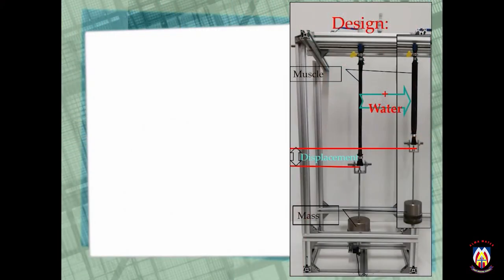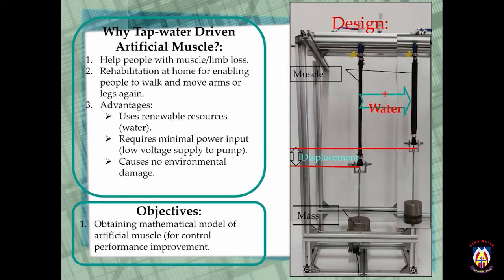To start off, as the diagram shows, it is the design of the artificial muscle. So why use a tap water driven artificial muscle? It's to help people with muscle or limb loss, for rehabilitation at home for enabling people to walk or move their arms and legs again. The advantages of using water: it uses renewable resources, requires minimal power input, and causes almost no environmental damage.